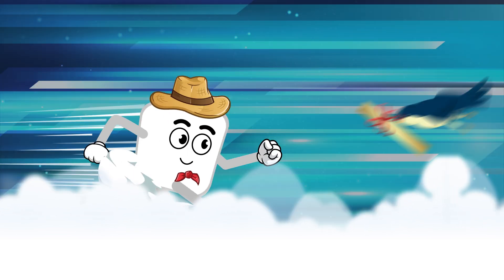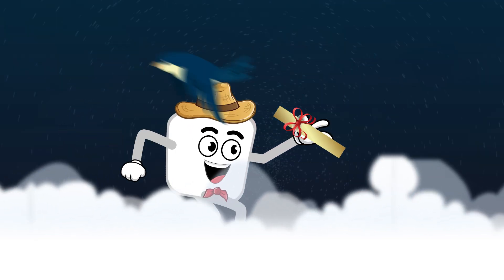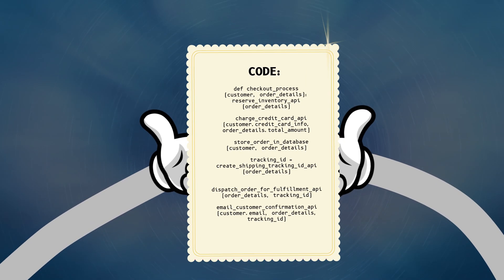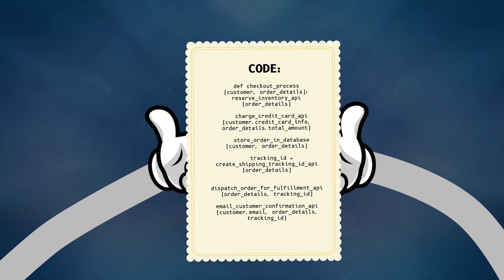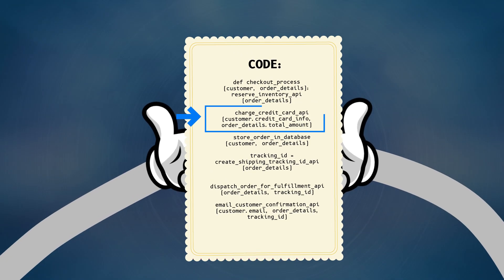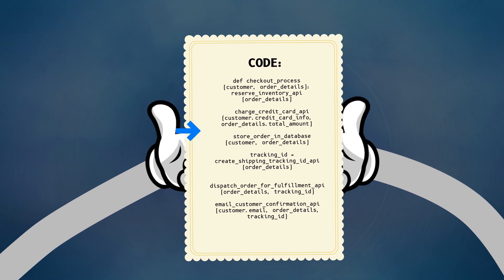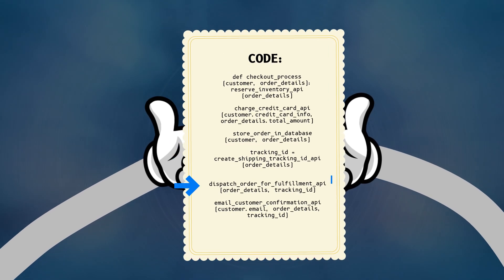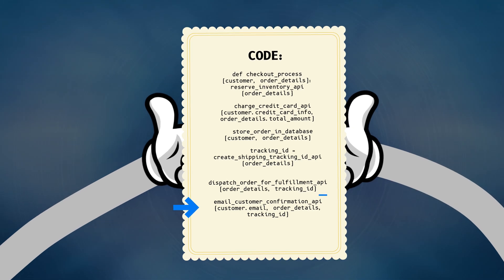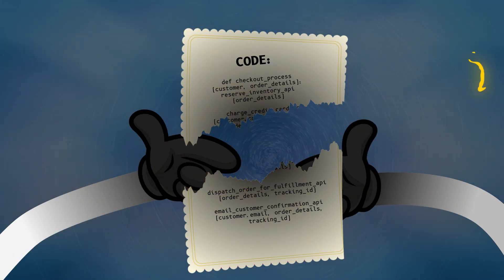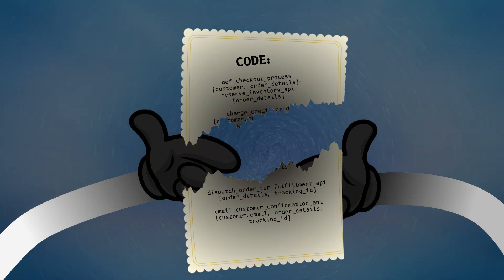Now your running app receives a very important request, like handling checkout for an online shopper. This important request must be handled reliably. All steps of the process must be completed. If your app dies after it has executed a few steps but before it finishes all of them, the result is disastrous. In the checkout example, the customer is charged for an order they never receive.